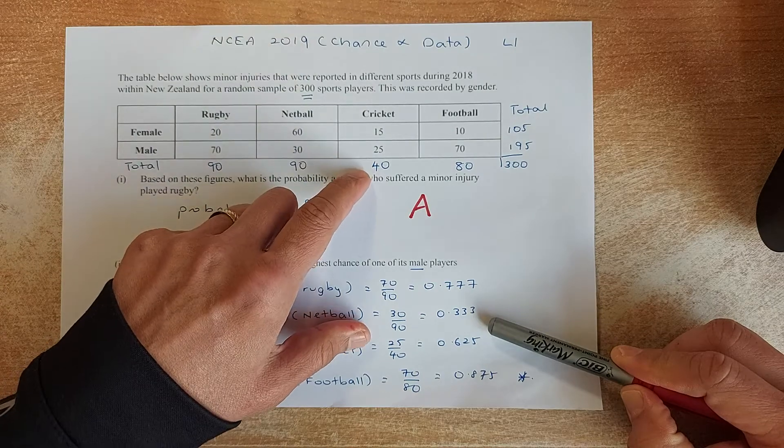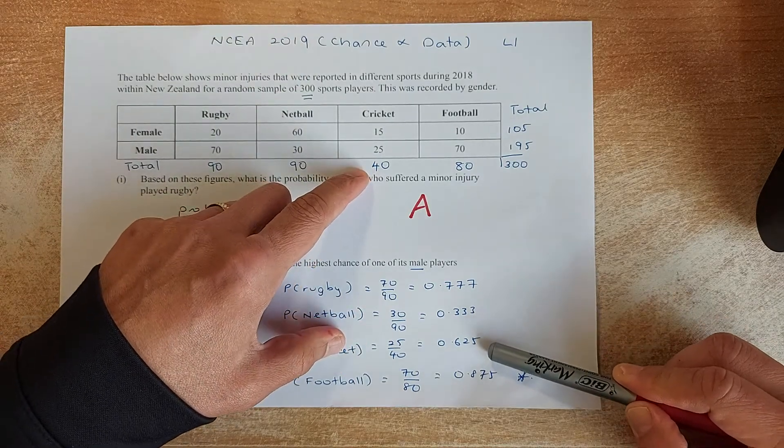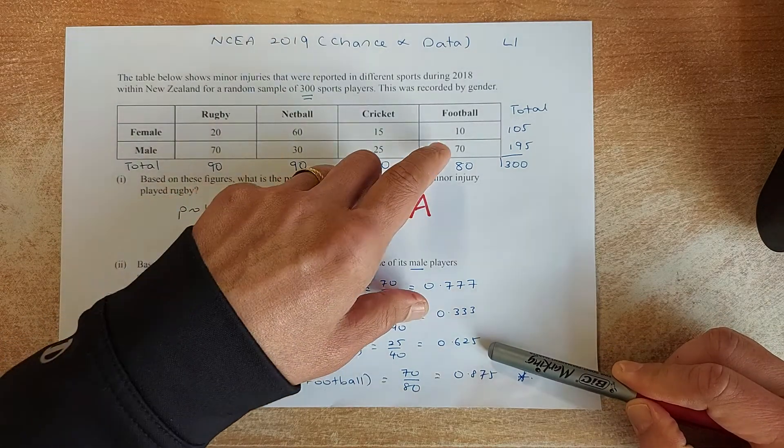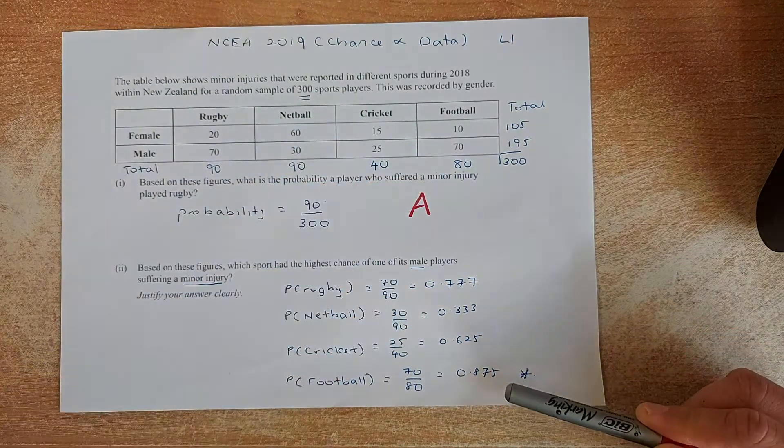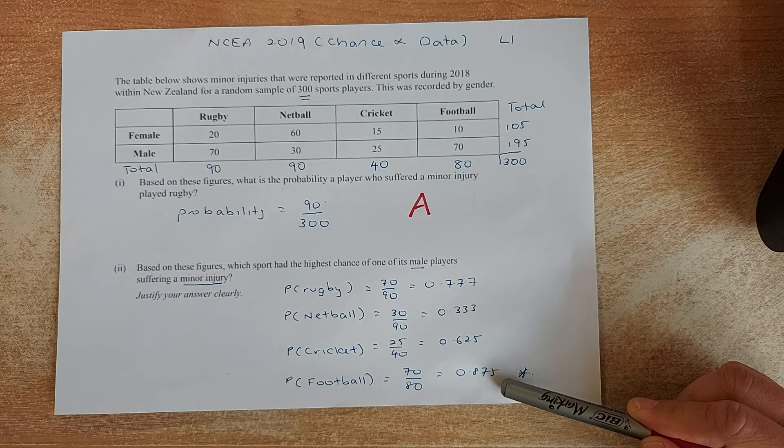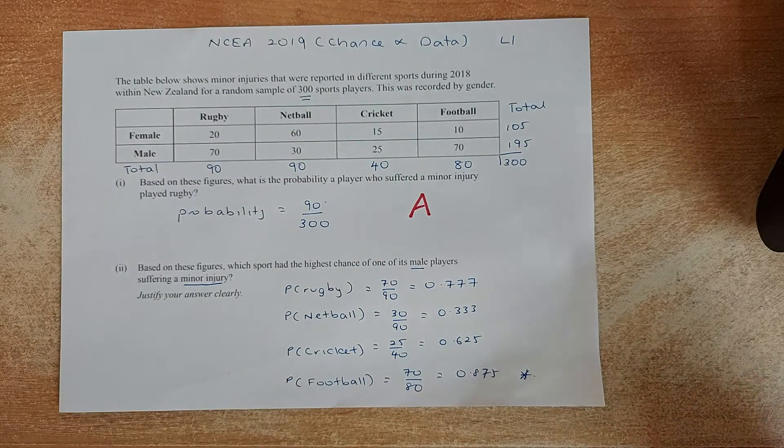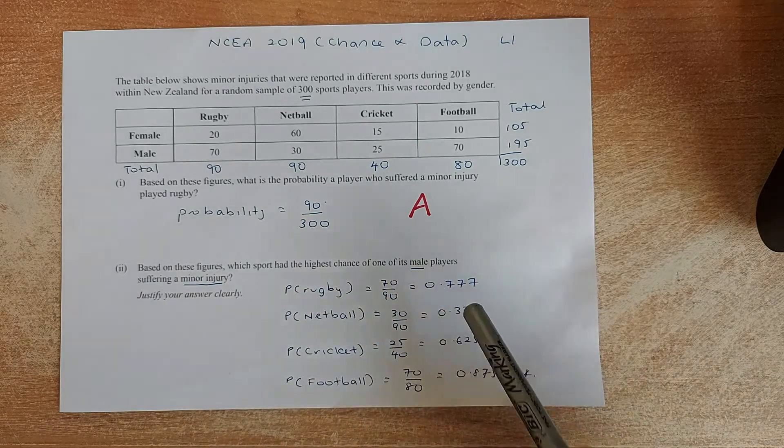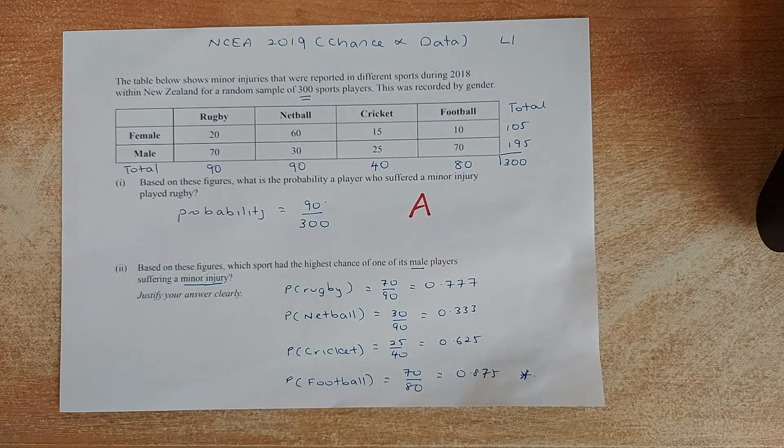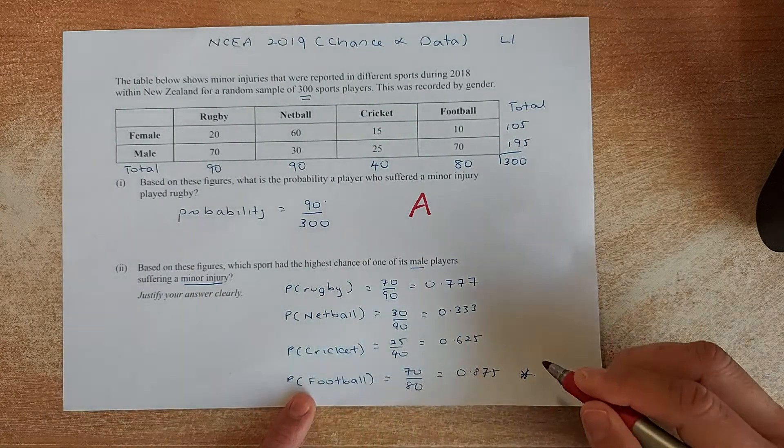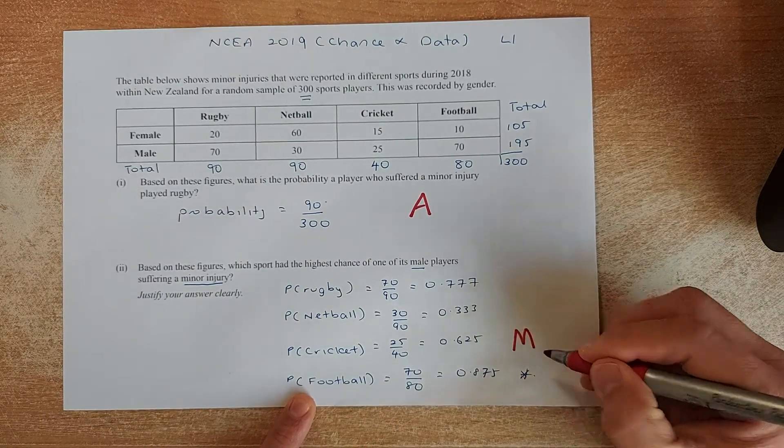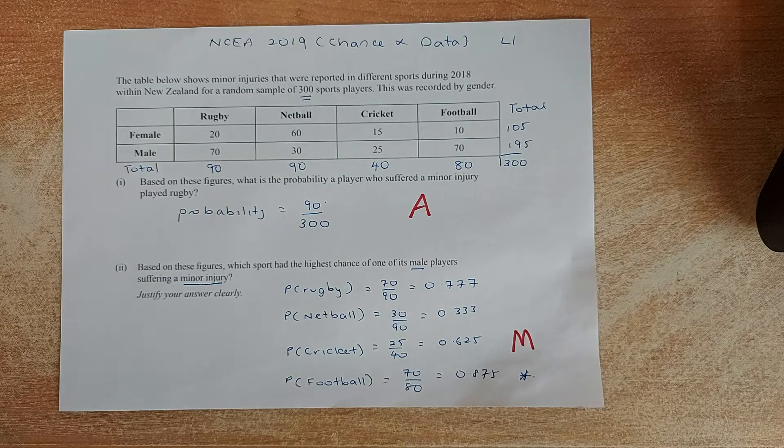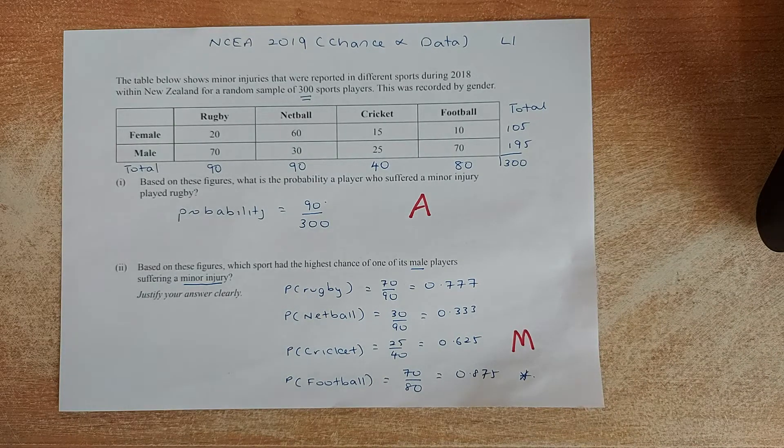For cricket, 25 out of 40, it's going to be 0.625. And football is 70 out of 80, it's 0.875. So we have to answer the question. Based on the figure, which sport has the highest chance of one of its male players suffering a major injury? The answer is when they are playing football. If you can answer that, that is the merit in NCEA level 1 for chance and data.